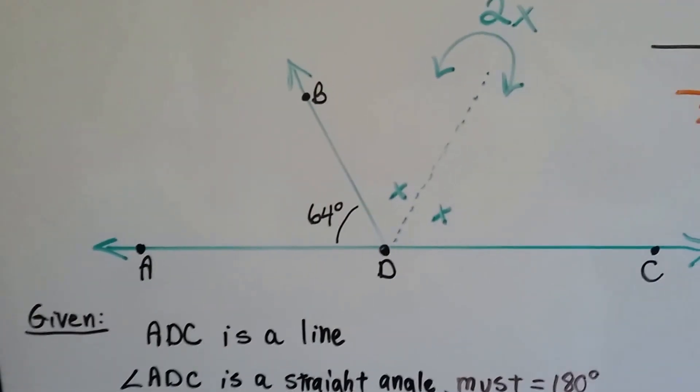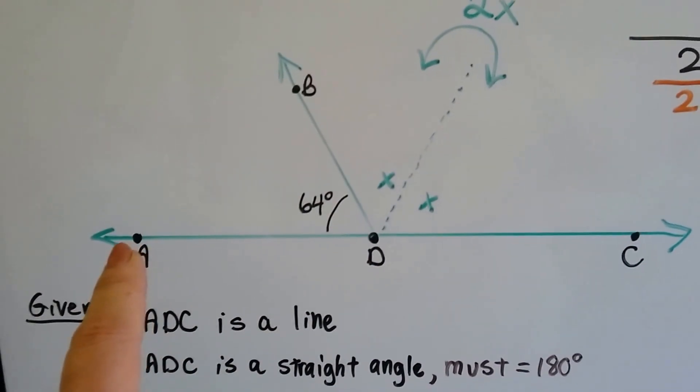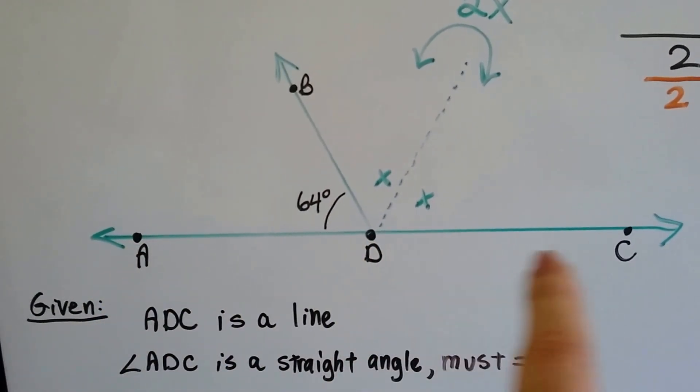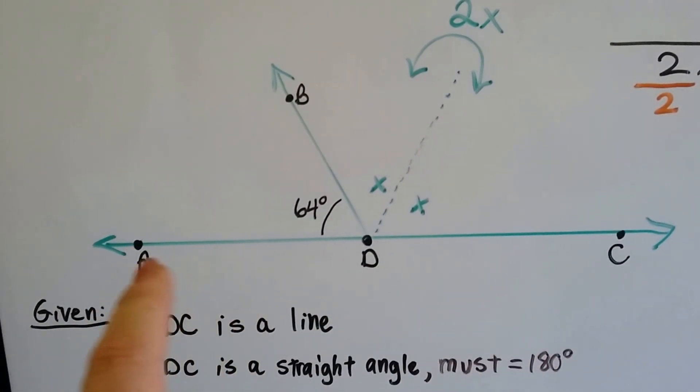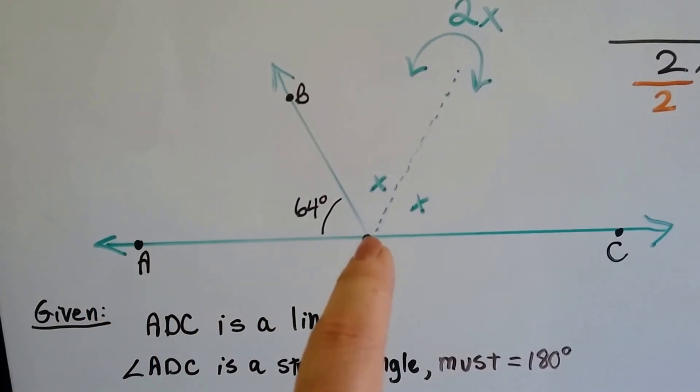So let's take a look at this drawing. We've got a straight angle of A, D, C. We've got an angle A, D, B, and it's given that it's 64 degrees.